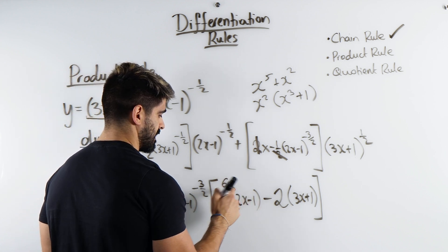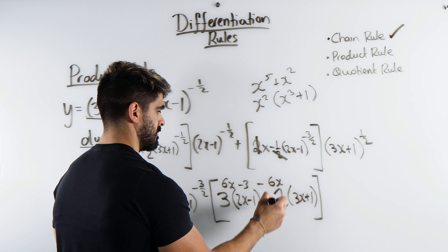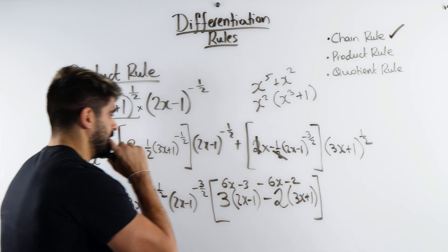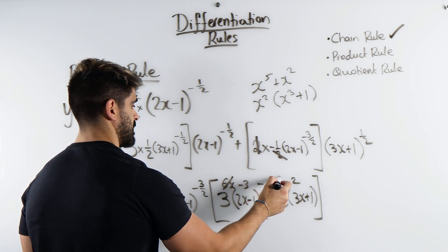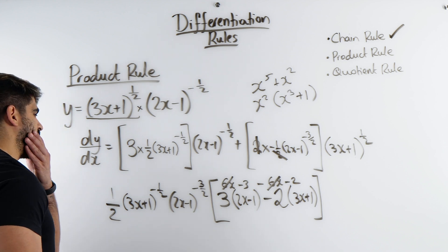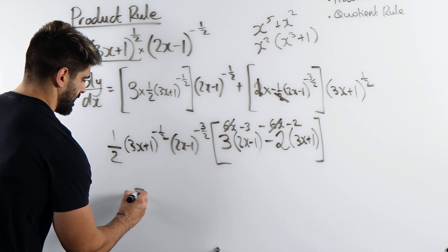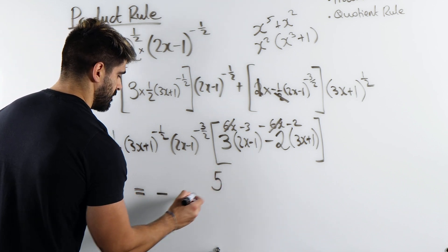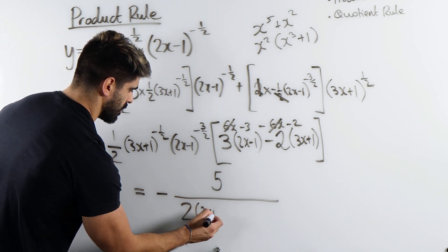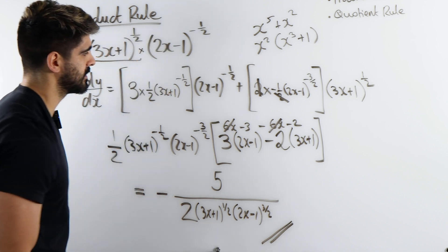I can expand this: I get 6x minus 3 minus 6x minus 2, which simplifies. That gives minus 5. To write it cleanly, with the negative powers moved to the denominator: minus 5 all over 2 times (3x+1) to the half — which you could write as a root. And that is the product rule.